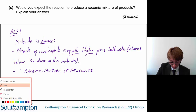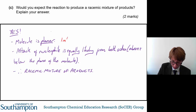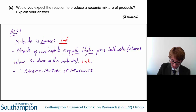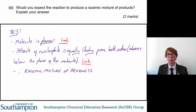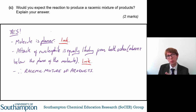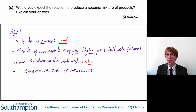In terms of marks, saying the molecule is planar gets you one mark, and saying that attack of the nucleophile is equally likely from both sides also gives you a mark. This is quite a conceptually difficult question, but once you study optical isomerism in more detail it will make a lot more sense. And that's question four.